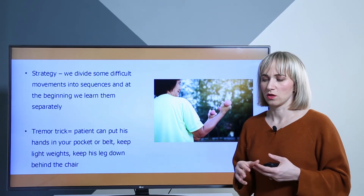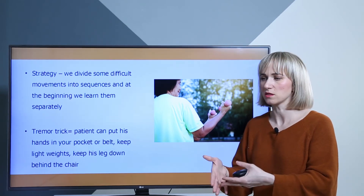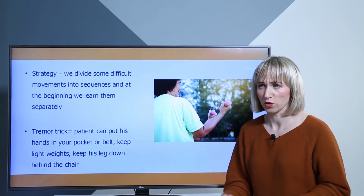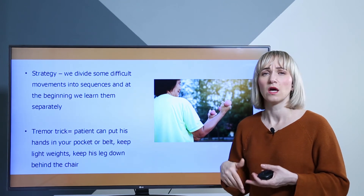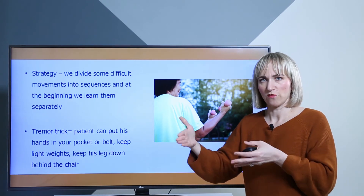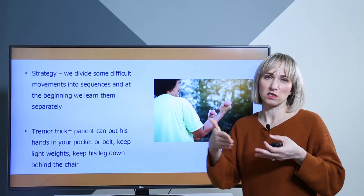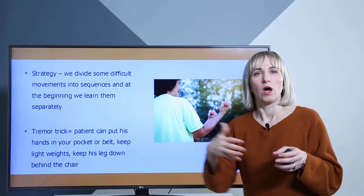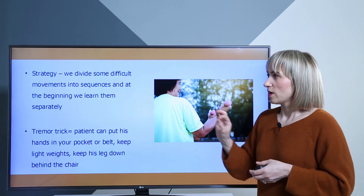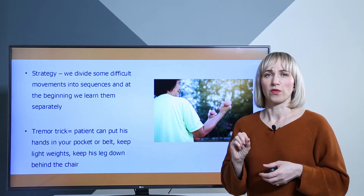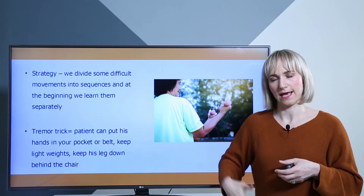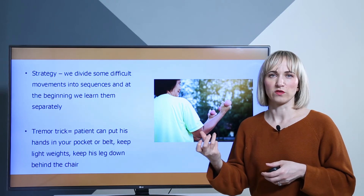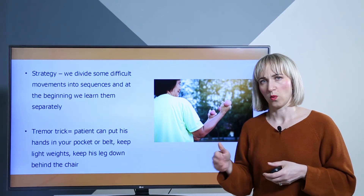A strategy for doing exercises is to divide them into sections and sequences. Difficult exercises like standing on one foot, squatting, standing from a chair, or climbing stairs may be difficult for patients. If you divide every exercise into sequences, it will be easier for the patient to understand and perform, and then you can combine all sequences together. There are also tricks to lower tremor: if the patient puts his hand in his pocket or holds something in his hands while walking, it's an active movement, so the tremor will diminish.